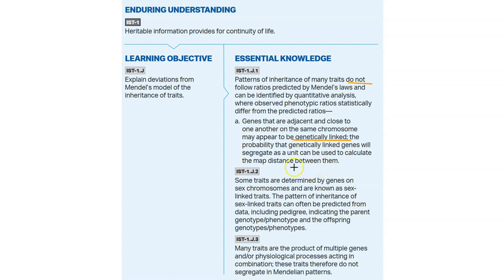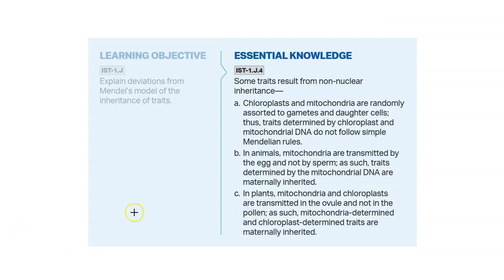Some genes may appear to be linked, and what does a map distance even mean between them? Some traits are on sex chromosomes — we already talked about that with sex linkage, X or Y, and pedigrees are important with that. Some traits involve multiple genes, like height and skin color — those also do not behave in a Mendelian way. You can also see that some traits aren't even in the nuclear inheritance mode, not even in the nuclear DNA, like chloroplasts and mitochondria — they contain their own DNA. Mitochondrial DNA does not follow Mendelian inheritance. Last year on the AP exam there was a question about this, and I spent probably like 10 seconds on it, so I want to spend a little more time on it this year.